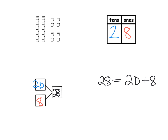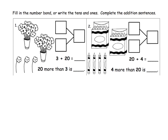Here it says: fill the number bond and write the tens and the ones. We're going to look at this picture. I see that we've got a 10 here and a 10 here, so that's our 20. And then I see that we have three ones down here. So what do we have altogether? We have 23 altogether.